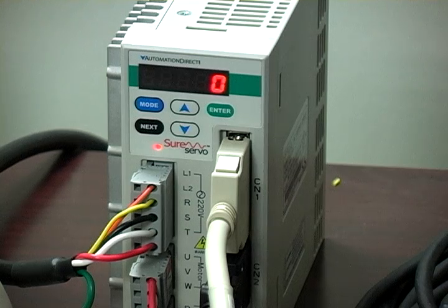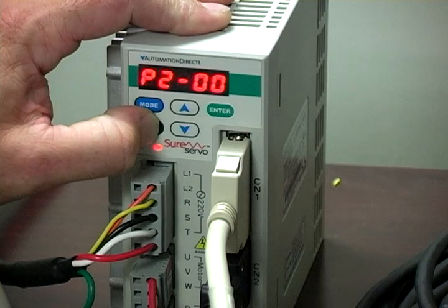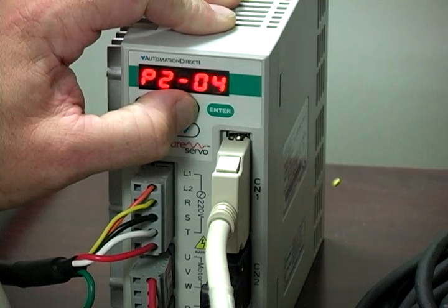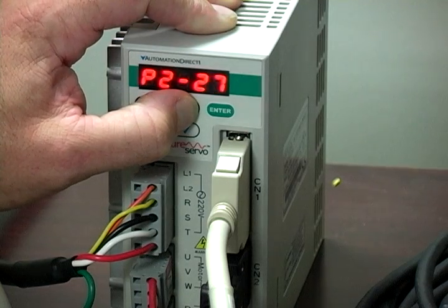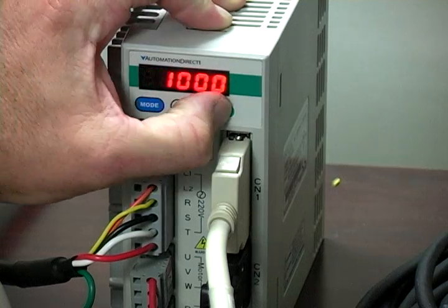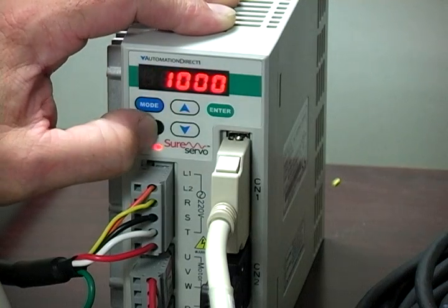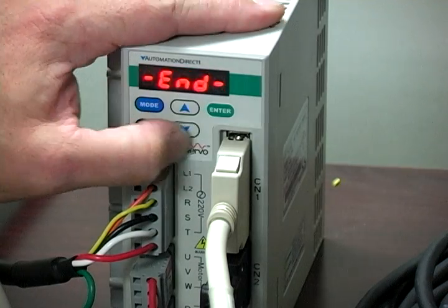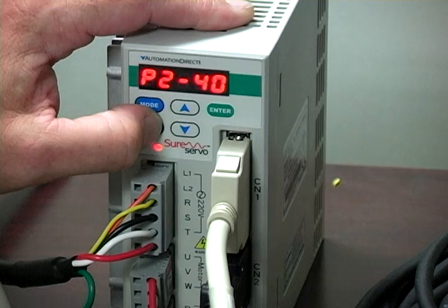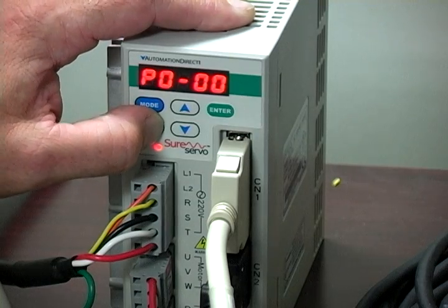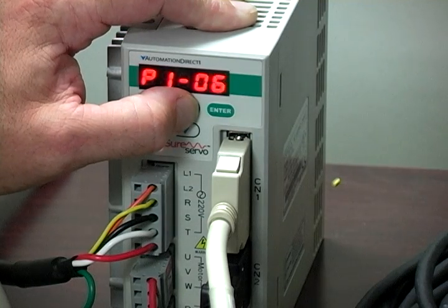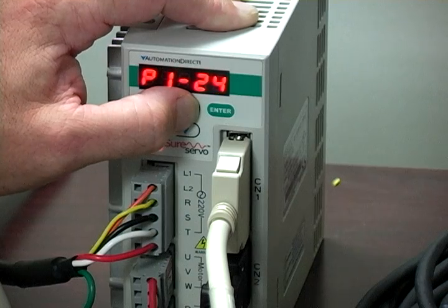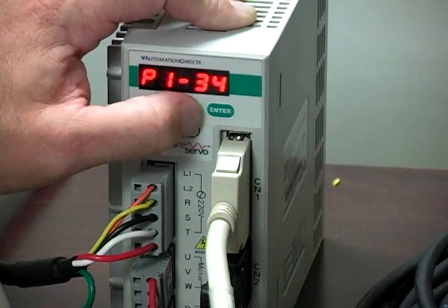Let's increase the speed of a move and slow the acceleration. I'll increase the speed of position move number 5 by changing P2-40 to 3000 RPM. The default was 1000. I'll slow the acceleration time P134 from its default value of 200 milliseconds to 2000 milliseconds.